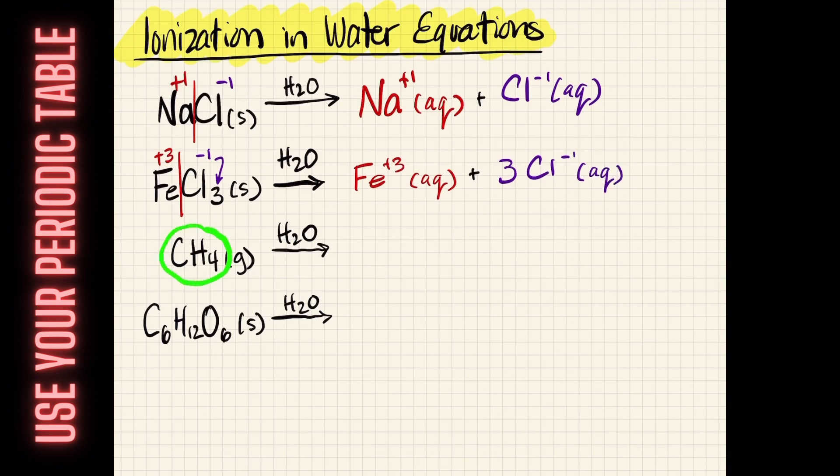Looking at the next two problems, we can see that this one, CH4, which is methane, is covalent. It's covalent because it's two nonmetals bonded together, and since they're nonmetals, it will not dissolve into ions. Instead, it's going to dissolve into individual molecules.